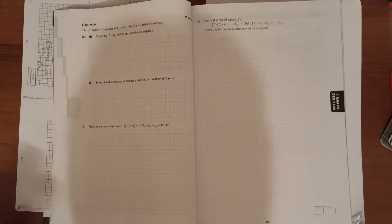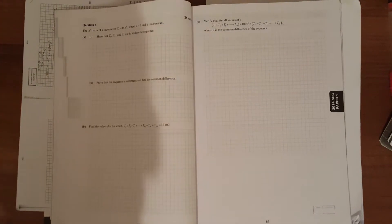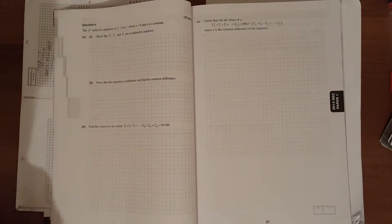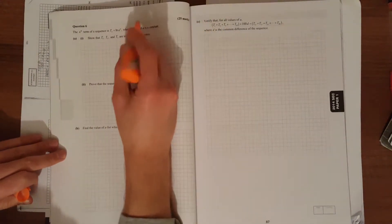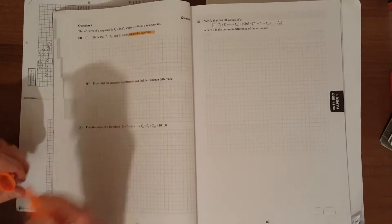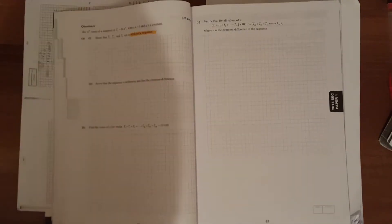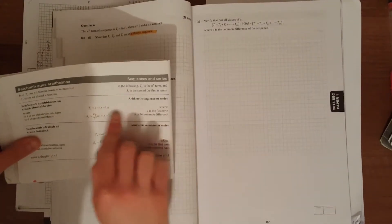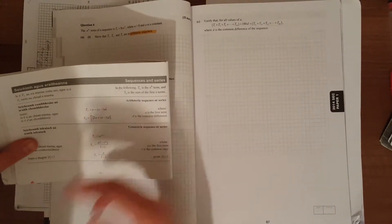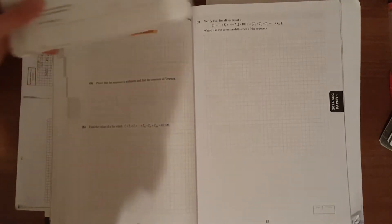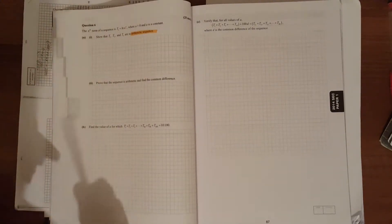This is a 2014 sequences and series question focusing on linear sequences or arithmetic sequences. When we see it's an arithmetic sequence, we know it's the same first difference, and when applying formulas, it's the one at the top. The question asks to show that t1, t2, and t3 are an arithmetic sequence.